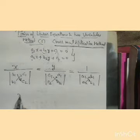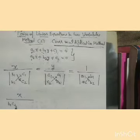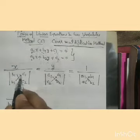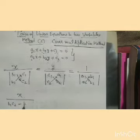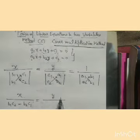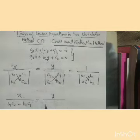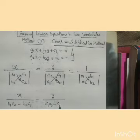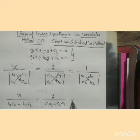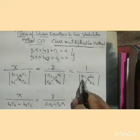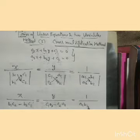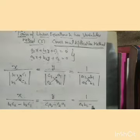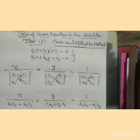So for x: multiply B1 by C2 (arrow pointing downward, positive), minus B2 by C1 (arrow pointing upward, negative). Equal to y upon C1 times A2 (pointing downward) minus C2 times A1 (pointing upward) equal to 1 upon A1 times B2 minus A2 times B1.